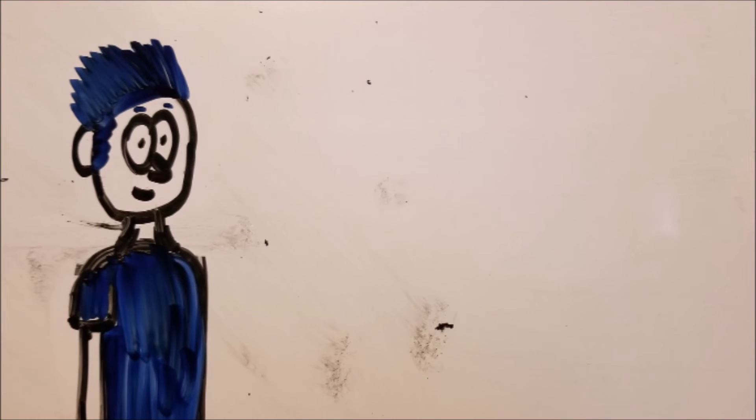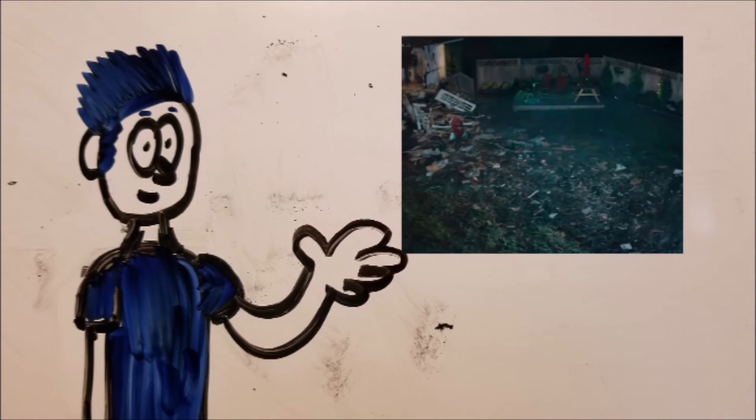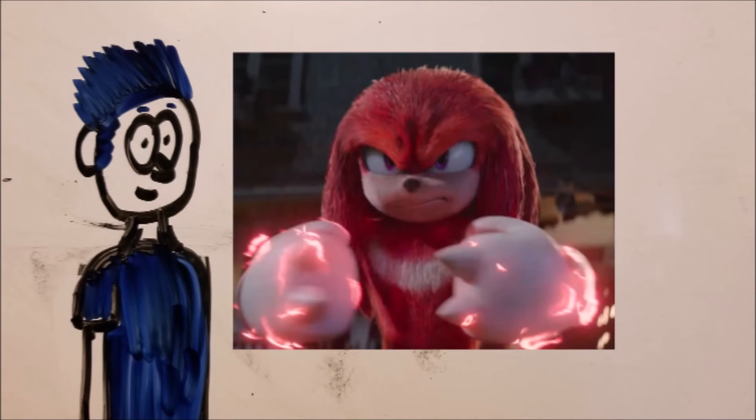And of course the money shot of this trailer is Knuckles the Echidna voiced by Idris Elba. And everything about this is just absolutely perfect. You can tell Knuckles will be a powerful foe for Sonic for this movie. Now it looks like he crashed the party in Tom and Maddie's house and I guess they won't be happy when they return with what Knuckles left behind.